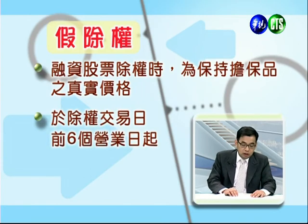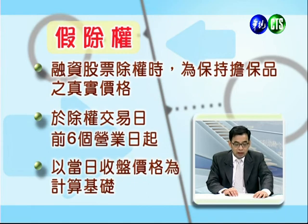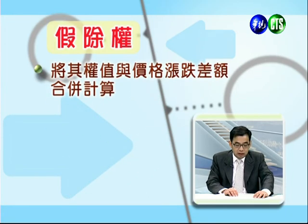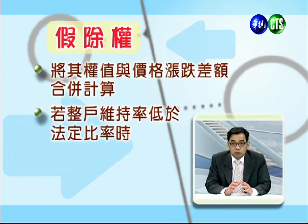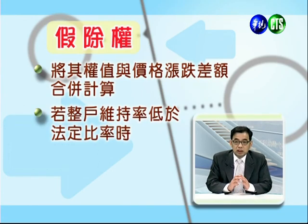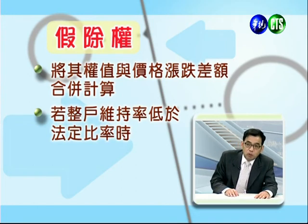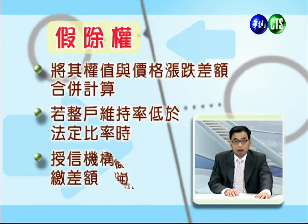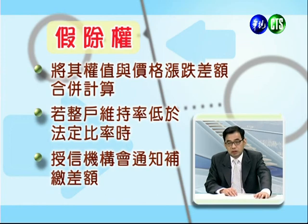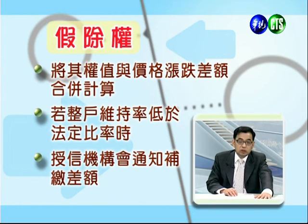接下来谈假除权：融资的股票在除权时，为了保持担保品的真实价格，在除权交易的前六个营业日期间，会以当日收盘价作为计算基础，将其前值以价格升降的差额合计计算。如果整户的维持率低于目前120%的法定比例，受信机构也就是证券公司就会通知你来缴差额，这就叫做假除权。